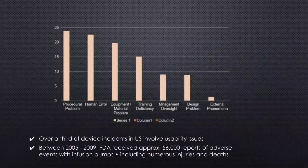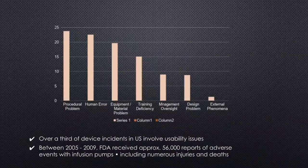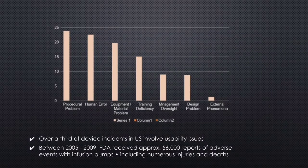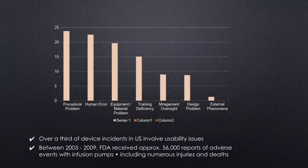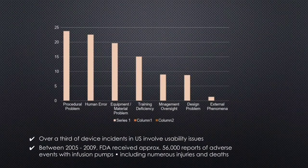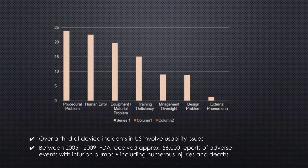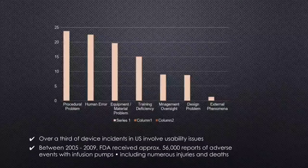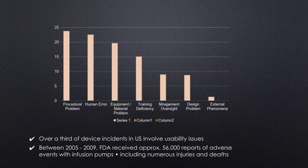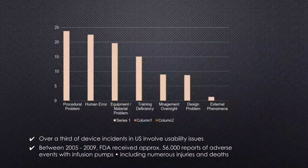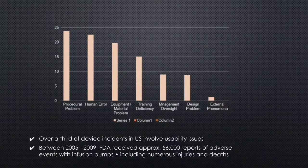For example, over one third of device incidents in the U.S. happen due to usability issues. The World Health Organization describes that between 2005 and 2009, the FDA received approximately 54,000 reports of adverse events with infusion pump products. The incidents include a large number of injuries and deaths, so here we can understand how important usability engineering is in product development.